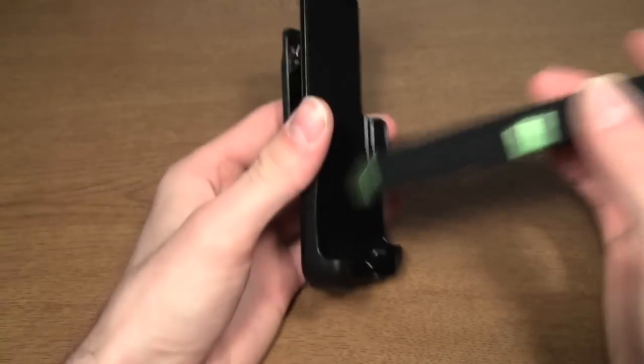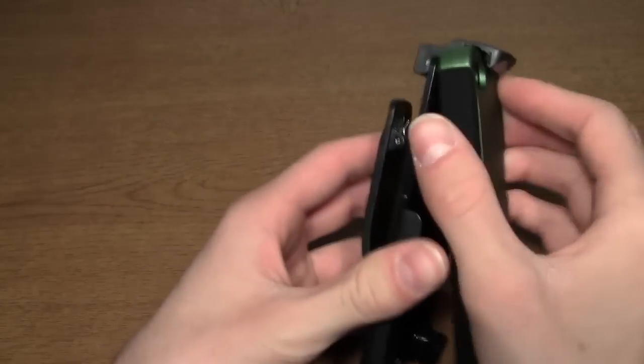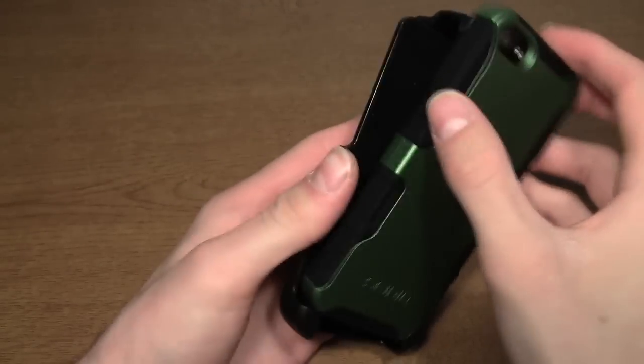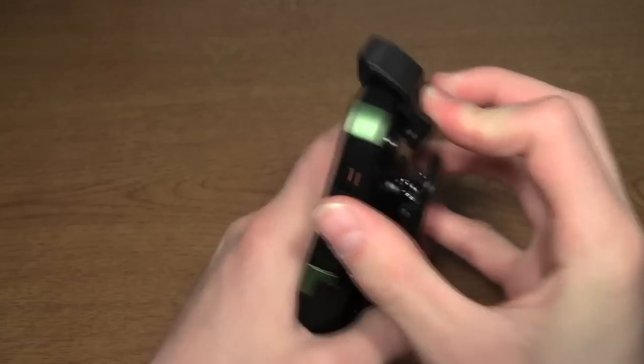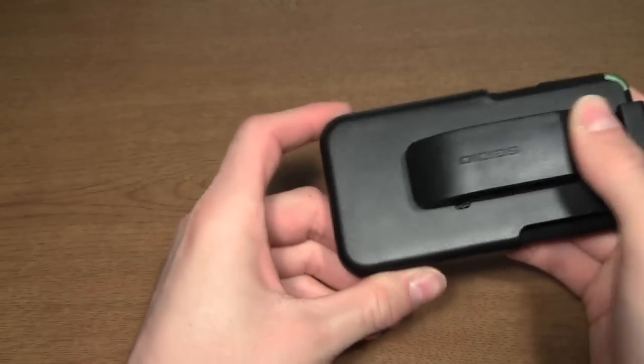So you put it screen in right in there. Actually how do you do this? Okay you put the corners at the bottom and then you lift it up and clip it in and then you can clip it to like your pants or something.